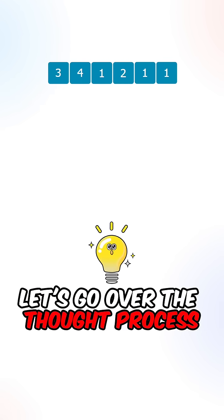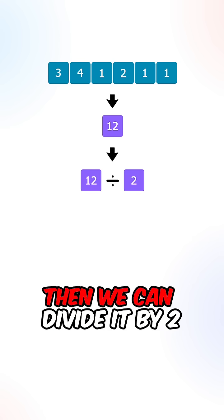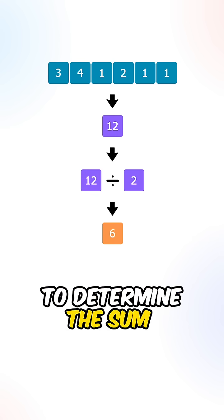Let's go over the thought process. What we can do is calculate the sum of all of the elements, then we can divide it by 2 to determine the sum of a subset.